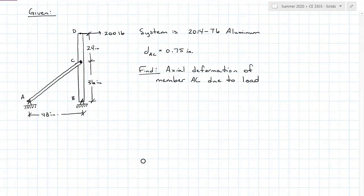Here we have a system made out of aluminum with rigid member BCD loaded at D with 200 pounds, supported at AC with a rod and supported at B with a pin. Find the axial deformation of member AC due to that 200 pound load.